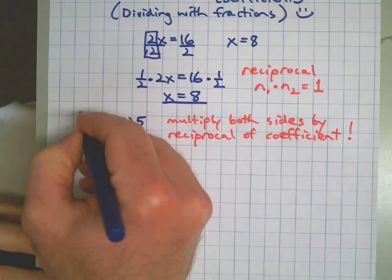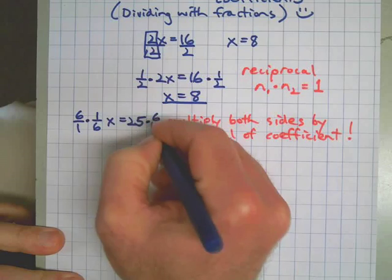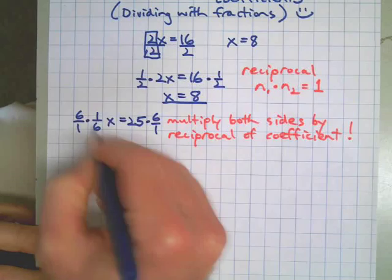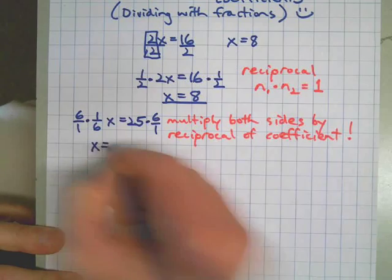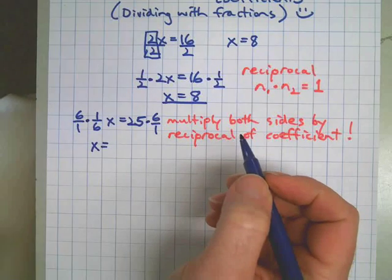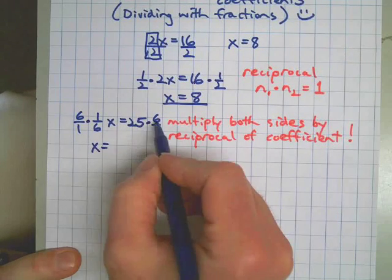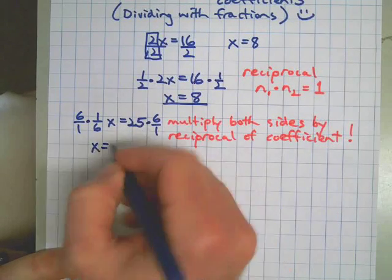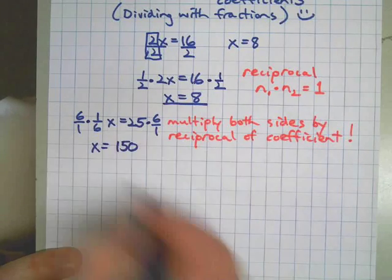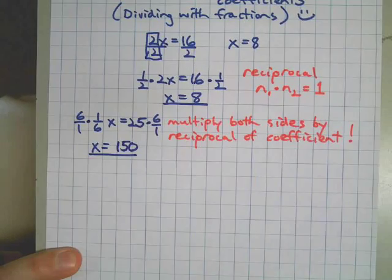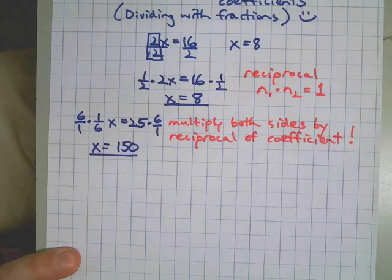The reciprocal of 1 over 6 is 6 over 1. Multiply both sides. This turns that into a single x, and then you can use your calculator or think: six quarters — what do I have? $1.50. Bam. Multiply both sides by the reciprocal of the coefficient.